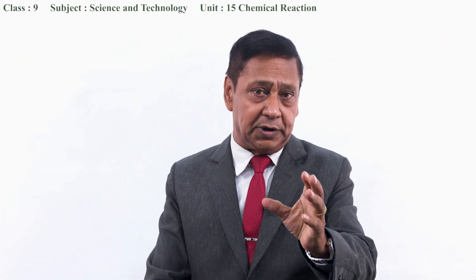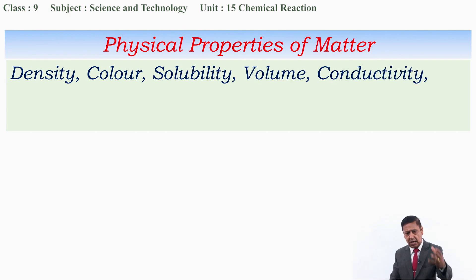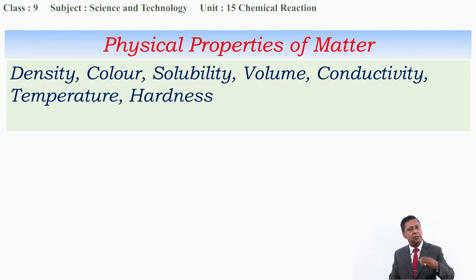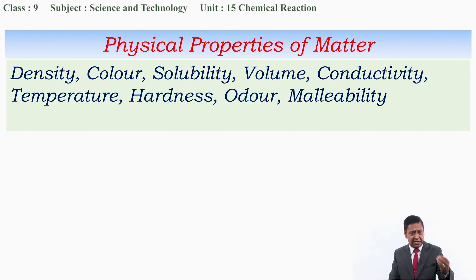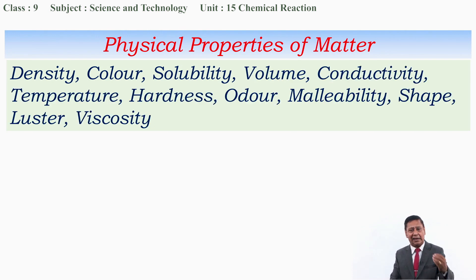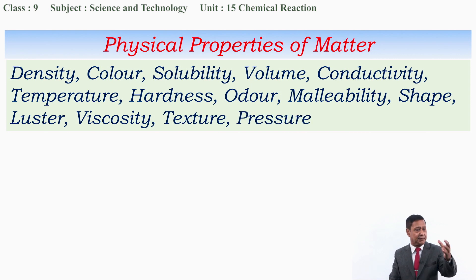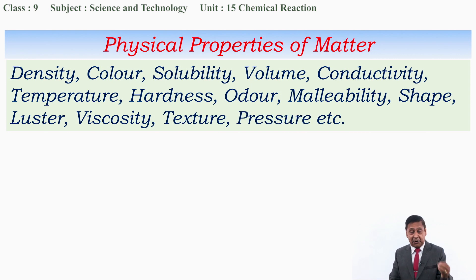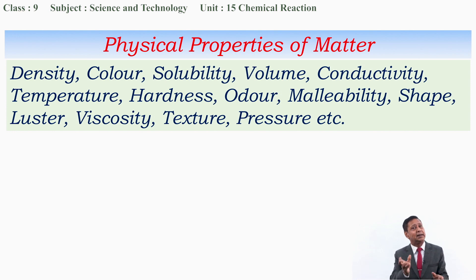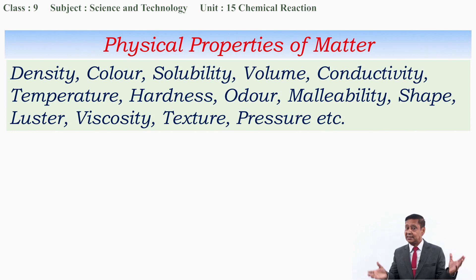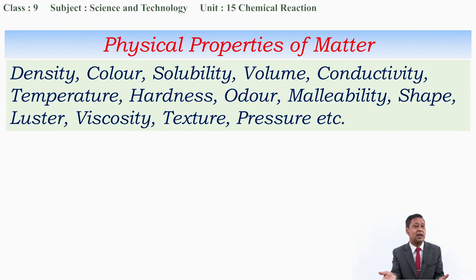What are the physical properties of matter? They are density, color, solubility, volume, conductivity, temperature, hardness, odor, malleability, shape, luster, viscosity, texture, pressure, etc. All these are called physical properties of matter. And in physical change, these properties are found to be changed — density changes, color changes, hardness changes because of physical change.